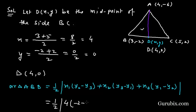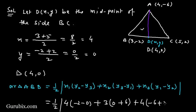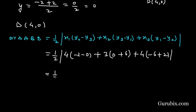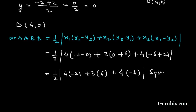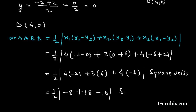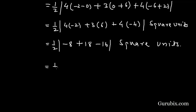Substituting into the formula: Area of ABD = (1/2) |4(-2 - 0) + 3(0 - (-6)) + 4((-6) - (-2))| = (1/2) |4(-2) + 3(6) + 4(-4)| = (1/2) |-8 + 18 - 6| = (1/2) × 6. But since area cannot be negative, the area of triangle ABD = 3 square units.